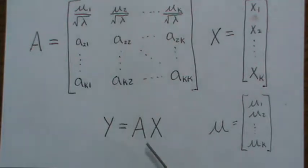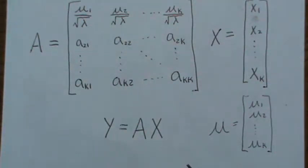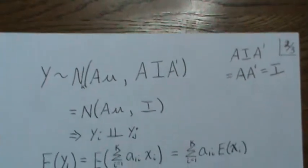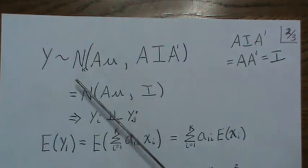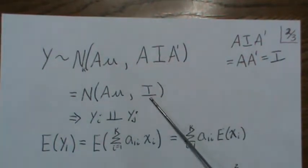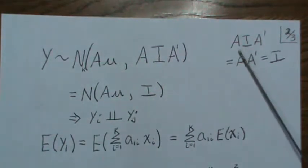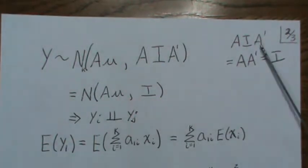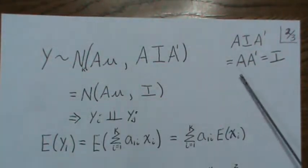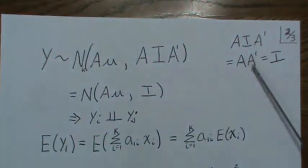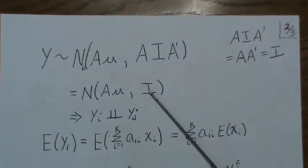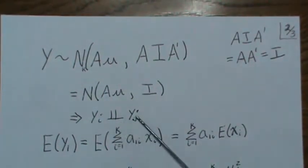Let μ be the mean vector defined above, and let y equal the transformation Ax. From distributional theory, y is also Normal with mean Aμ and variance AIA-transpose. But because A is orthogonal, A times A-transpose reduces to the identity matrix I, so the variance-covariance matrix is diagonal. This means each of the yi's are independent.